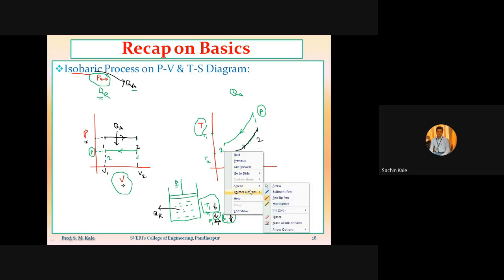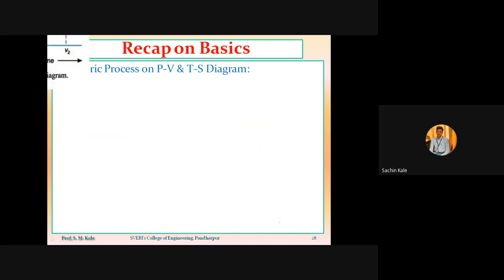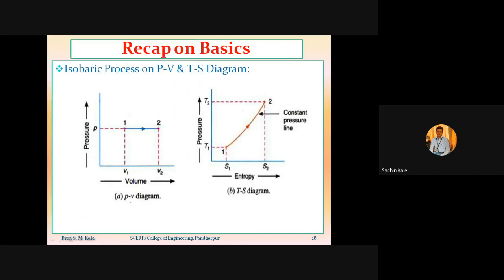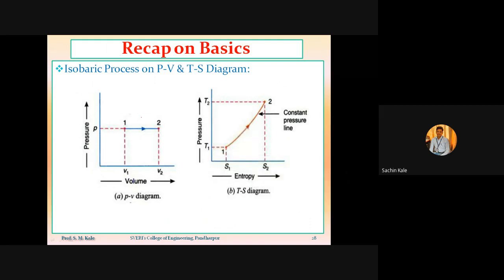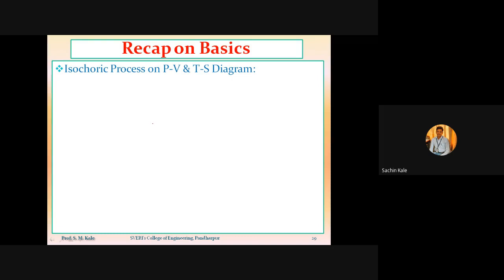Likewise, you have to draw each and every process on the PV as well as TS diagram. I'll now show the isochoric process. On the PV diagram, when the arrow points in the direction of increasing volume, it represents the isobaric heat addition process. If it were the heat rejection process, points one and two would be swapped and the arrow reversed — representing the isobaric heat rejection process. Similarly, I will now draw the isochoric process on the PV and TS diagram.